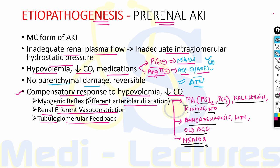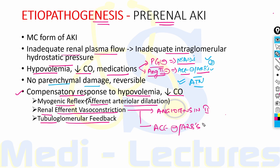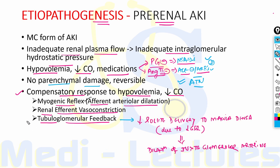Renal efferent vasoconstriction is mediated by angiotensin 2 and is affected when ACE inhibitors and ARBs are used — particularly pronounced in bilateral renal artery stenosis or stenosis of a single artery with one functional kidney. The third mechanism, tubuloglomerular feedback, is due to decreased solute delivery to the macula densa cells occurring due to hypotension and decreased GFR, which leads to dilation of juxtaglomerular arterioles and increased intraglomerular hydrostatic pressure.